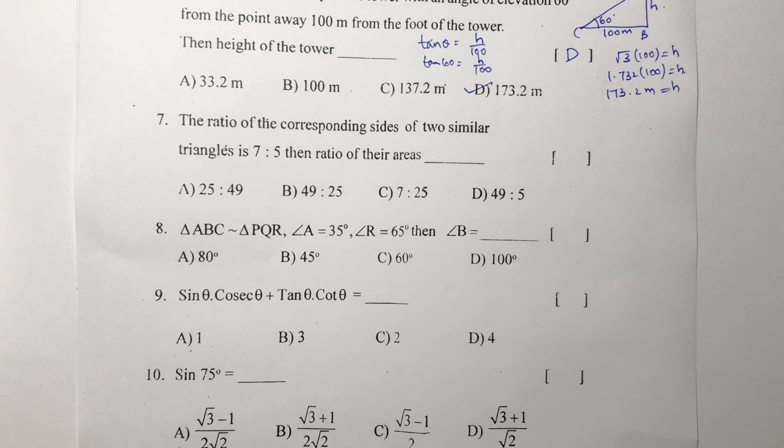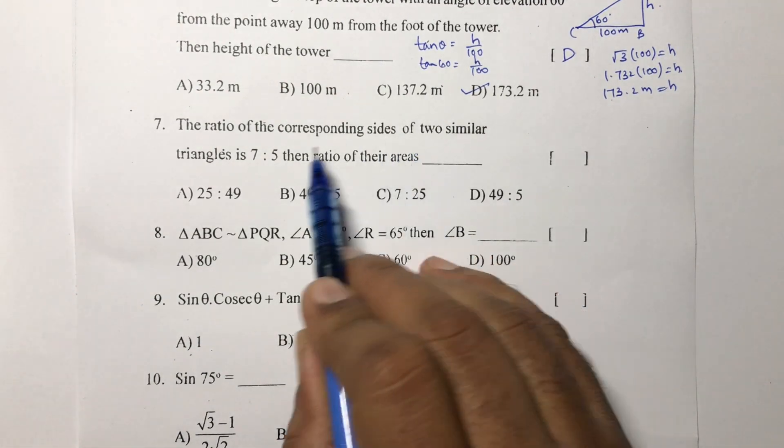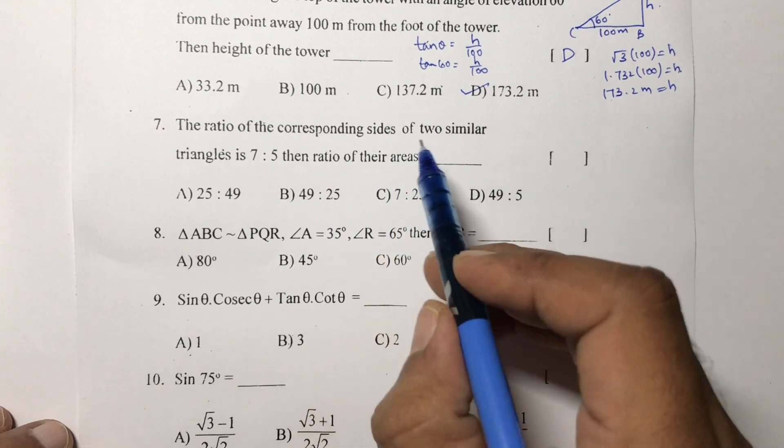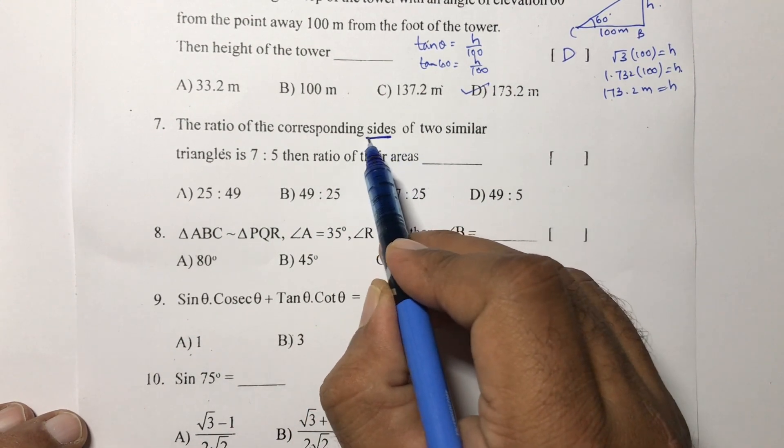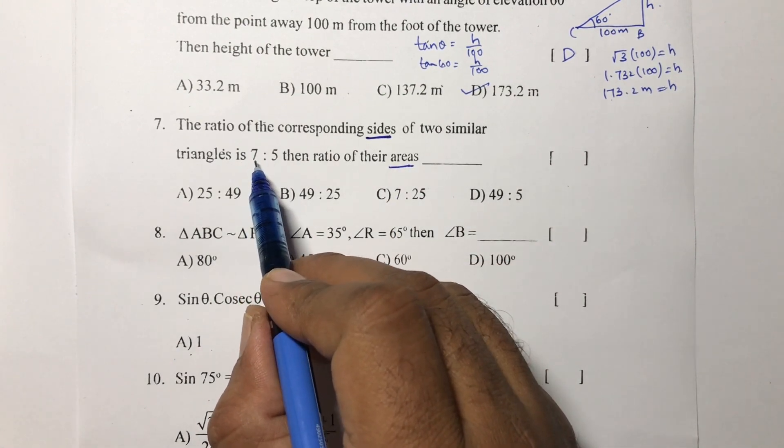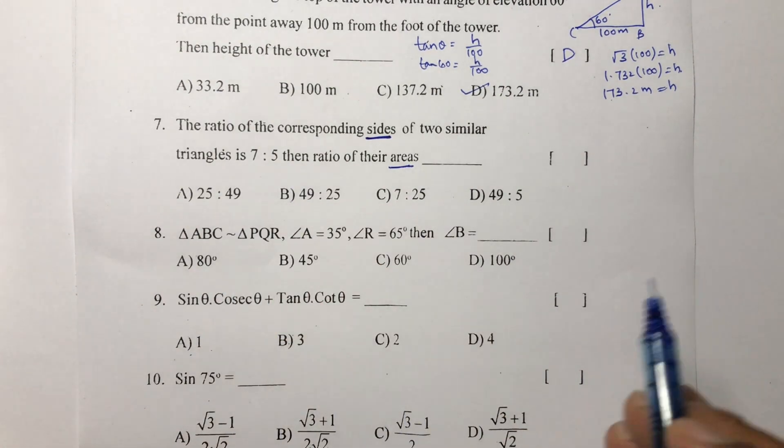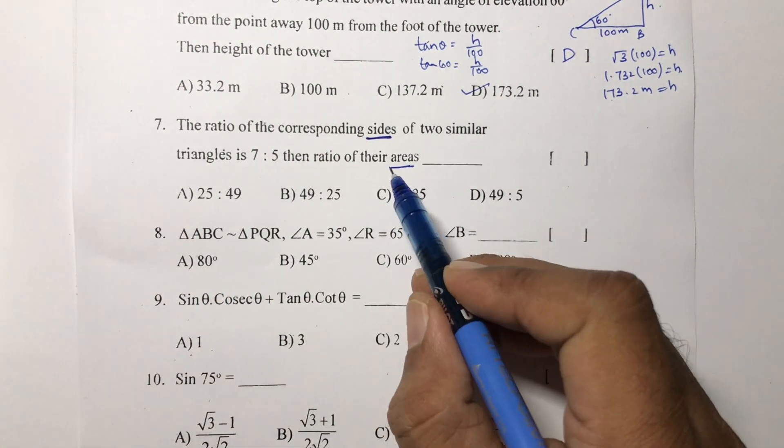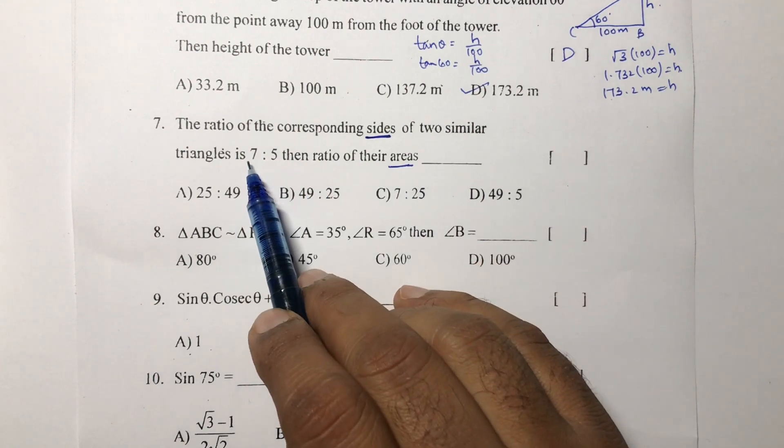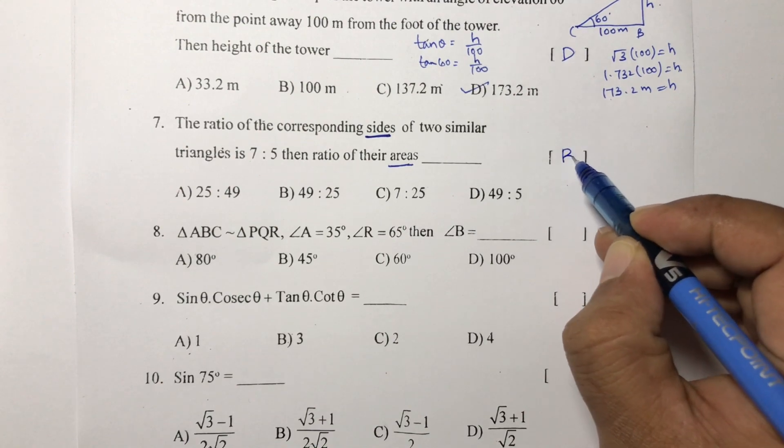The ratio of the corresponding sides of two similar triangles is 7 is to 5, then find the ratio of their areas. Whenever they give sides, perimeters, altitudes, or medians and ask for areas, just square the ratio of the sides. You will get 49 and 25. Because there is a theorem: the ratio of the areas of two similar triangles is equal to the ratio of the squares of the corresponding sides. 49 is to 25, the correct option is B.